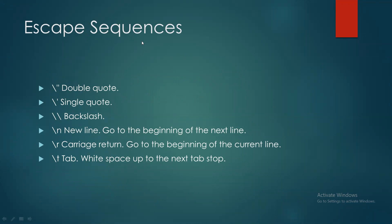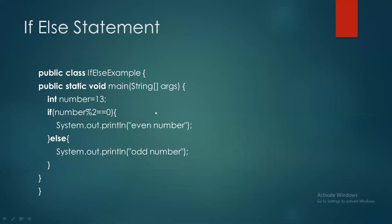Escape sequences C++ کی طرح Java میں بھی ہیں: \" double quote، \' single quote، \\ back slash، \n new line، \r carriage return (beginning پر لے آتا ہے)، \t tab space دینے کے لیے۔ اس کے بعد if-else statements آتی ہیں لیکن انہیں ابھی cover نہیں کریں گے — اگلے lecture میں دیکھیں گے۔ Next part میں NetBeans use کرنا سیکھیں گے اور simple Java programs execute کریں گے۔